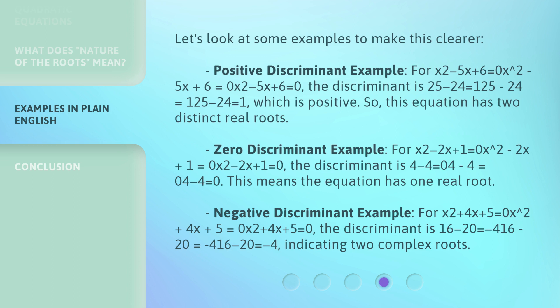Zero discriminant example: For x² - 2x + 1 = 0, the discriminant is 4 - 4 = 0. This means the equation has one real root.